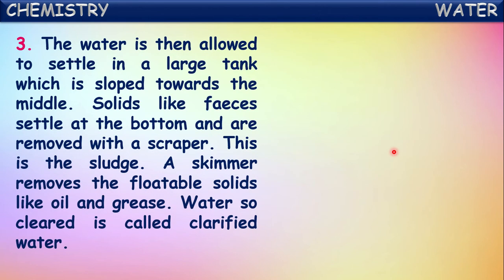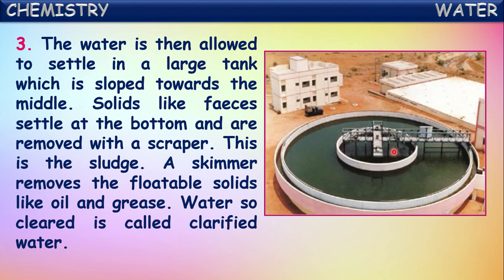Then the water is allowed to settle in a large tank which is sloped towards the middle. Solids like feces settle at the bottom and are removed with a scraper. This settled material is called sludge.